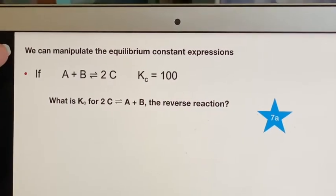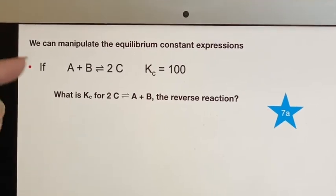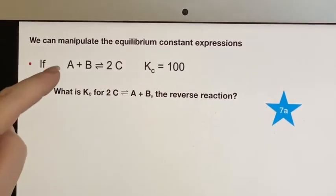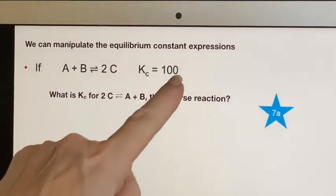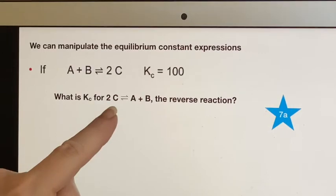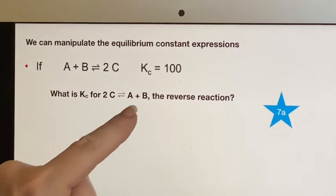We can manipulate these equilibrium constant expressions. If we've been told that for this equation, K sub C is 100, what would K sub C be for this, which is the reverse reaction?